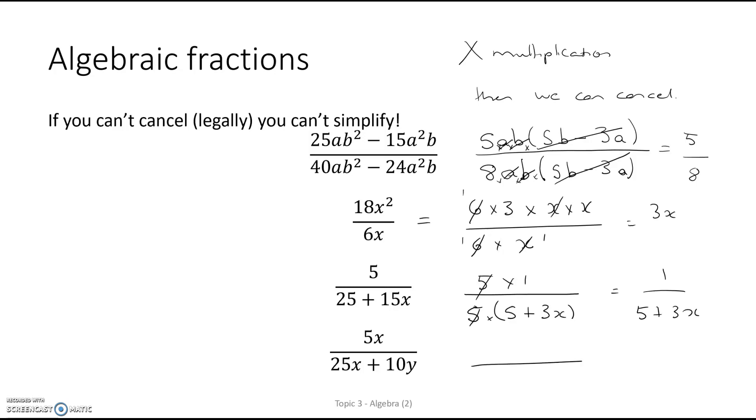The last example there, factorize the top lines. 5 times x. Take out a common factor of 5. So 5x plus 2y. The only thing then common is the 5s. So we've got x over 5x plus 2y.